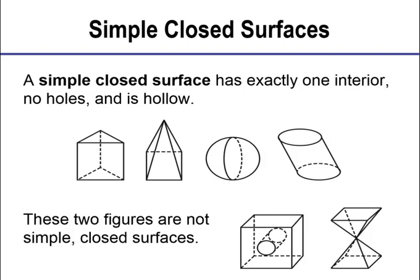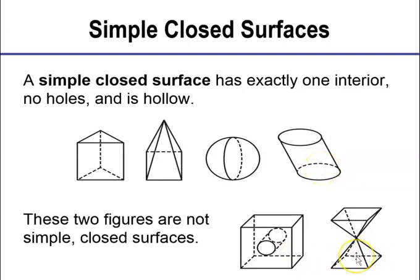Let's define simple closed surface. It has exactly one interior, no holes, and is hollow. Notice all four of these figures listed here fit that description. There's only one interior in this triangle-shaped situation right here. Only one interior here — this is actually a pyramid. Here is a sphere. And here is a cone — it's an oblique cone. Now, the figures below, the bottom two, are not simple closed surfaces. Why would you say they're not?